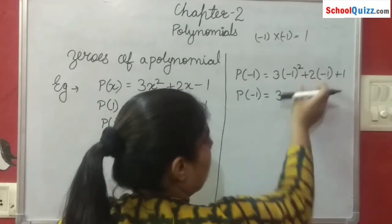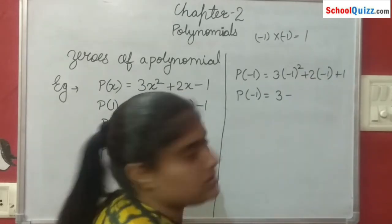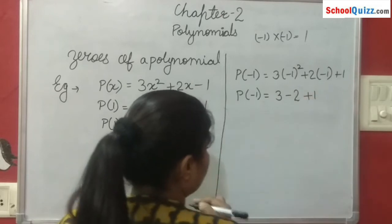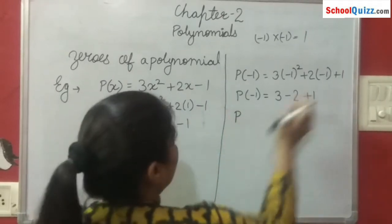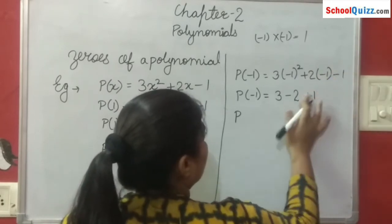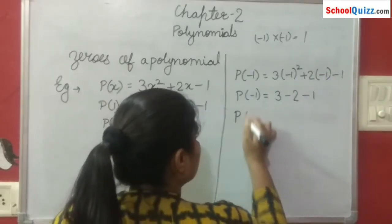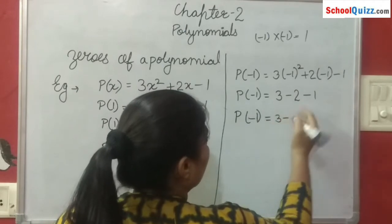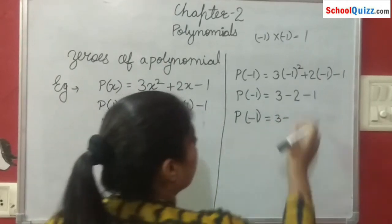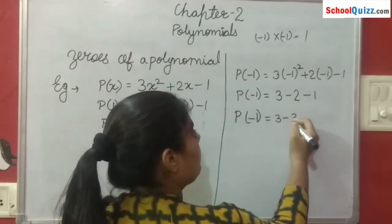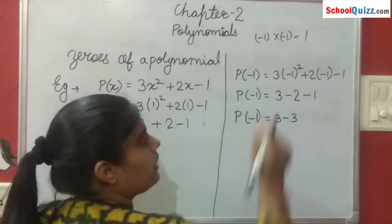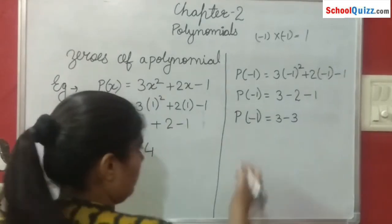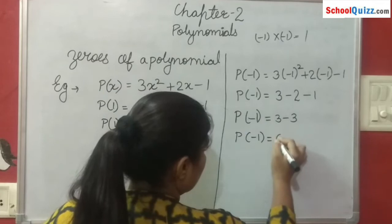Now plus into minus — جب ہم plus کو minus سے multiply کریں گے تو minus ملے گا. 2 times 1 we get 2, and then minus 1. So P of minus 1 — here it is minus 1. We get 3, and minus minus ہمارا plus ہوتا ہے, so 2 plus 1 is 3. Then we have minus 2 minus 1 which becomes minus 3. So P(minus 1) equals to 0.